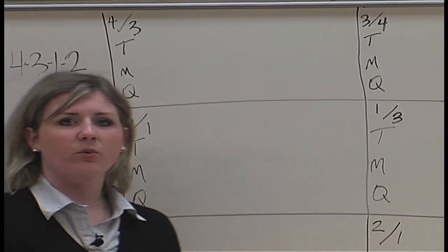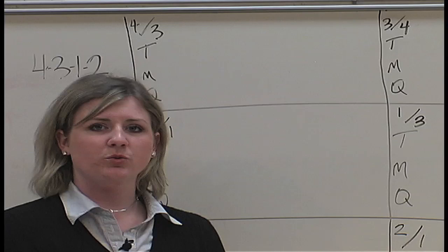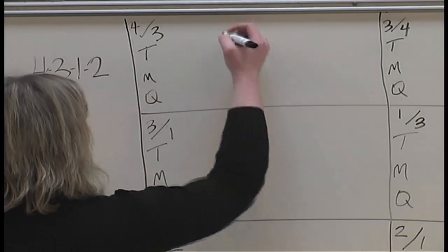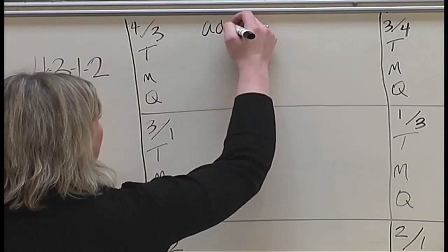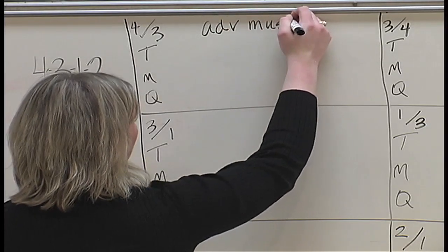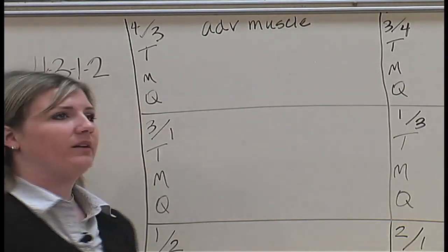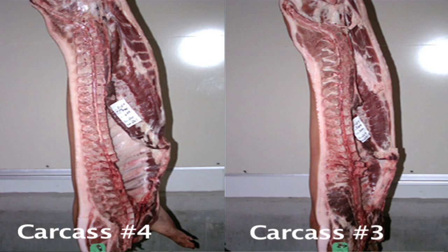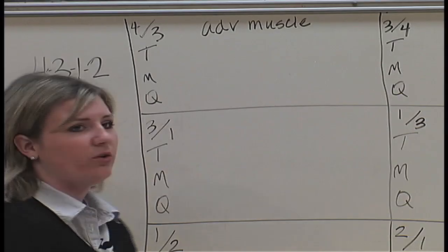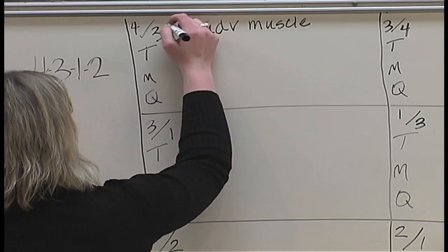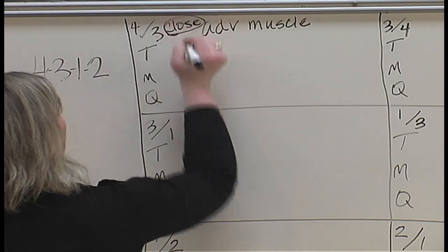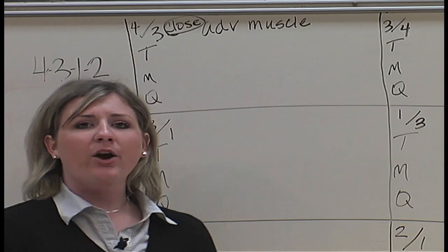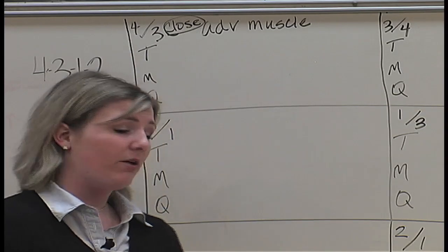The next thing we want to do is take our topic sentences for each pair. In the top pair, muscling would have been the biggest difference, but it wasn't a very large difference. So we're going to use a term like 'advantages' to indicate it was only a small difference between those two carcasses. They were very close in terms of their placing and makeup, so you can write 'close' here, indicating to you when you prepare your reasons that you knew it was a close pair.